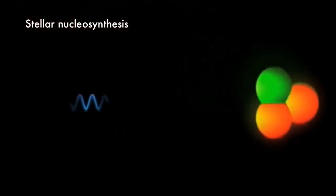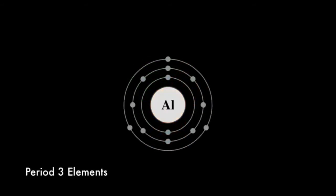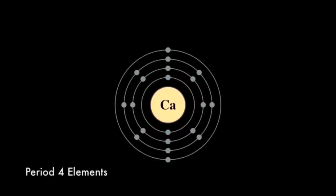The very first elements were created in the core of a star in a process called stellar nucleosynthesis, where chemical elements can assemble. The first of which were hydrogen, helium, and then lithium.